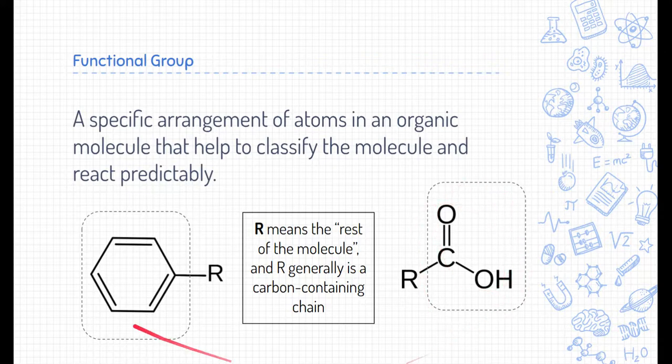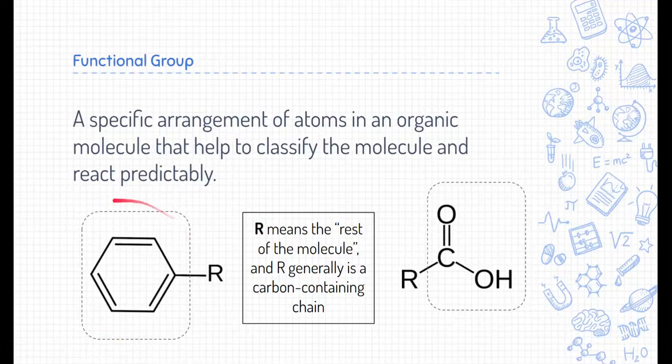When we talk about classifying parts, we're talking about functional groups. Here are some examples of functional groups down here. These are just arrangements of atoms, specific arrangements of atoms that are found in organic molecules, and they help classify molecules and they react predictably. Notice here we've outlined the functional groups in these dotted lines, and we're going to name them in just a minute.